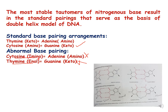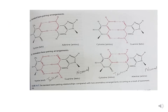For example, when cytosine is in imino form, instead of pairing with guanine it pairs with adenine. When thymine is in enol form — the tautomeric form of thymine — instead of pairing with adenine it pairs with guanine. This results in transition events. The tautomer of thymine in enol form pairs with guanine instead of adenine, and the tautomer of cytosine in imino form pairs with adenine instead of guanine.